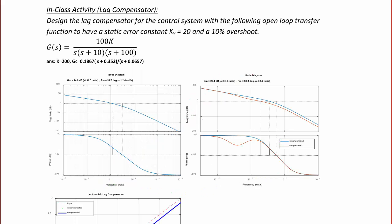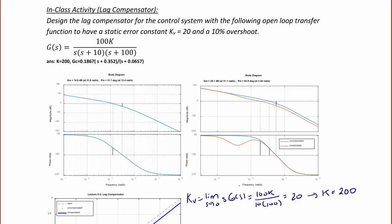First, let's find K. KV is equal to the limit as s approaches zero of s*G(s), which equals 100K over (10 times 100), and we set that equal to 20. Solving for K gives K equal to 200. That was step 1. For step 2, we create the Bode plot using K equal to 200.